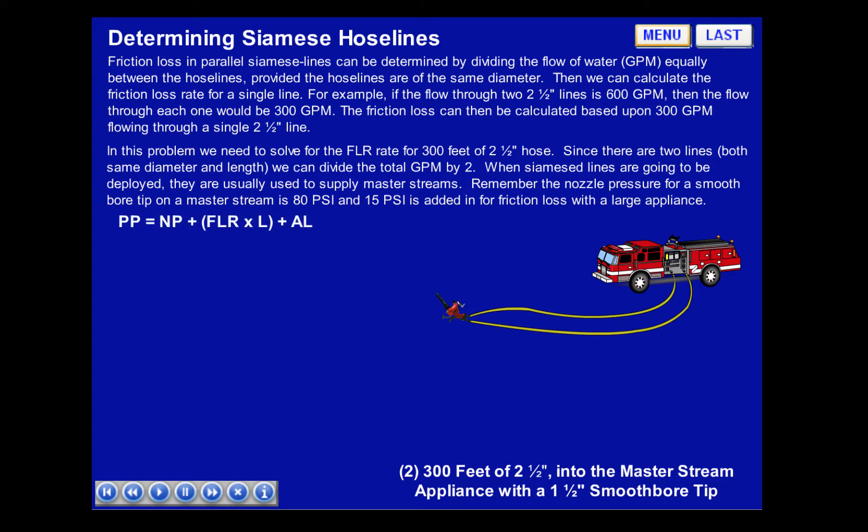To set this problem up, pump pressure equals nozzle pressure, plus friction loss rate times length, plus appliance loss.